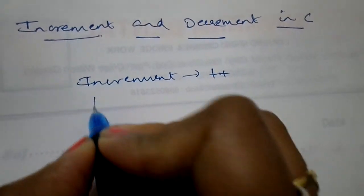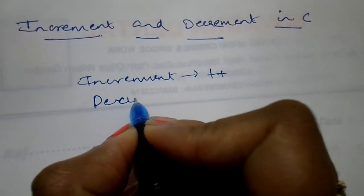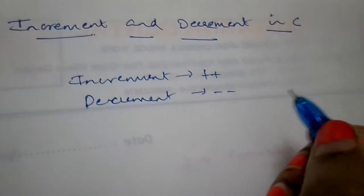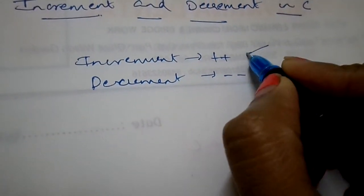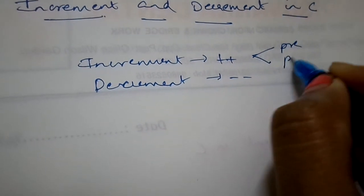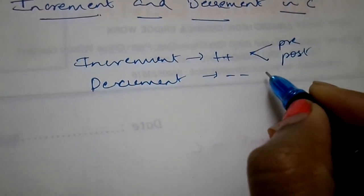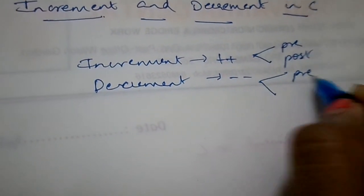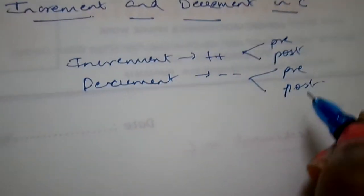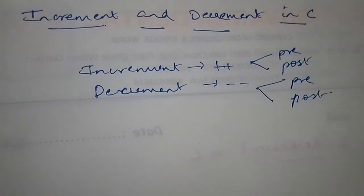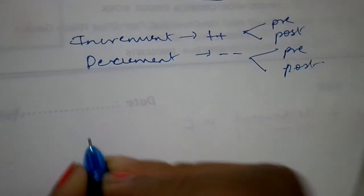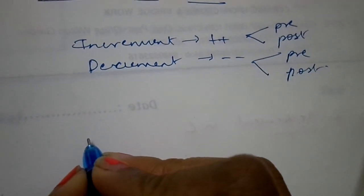We have two types of incrementing operators: pre and post increment. And we have decrement as well - pre and post. First thing we're going to talk about is pre and post increment.